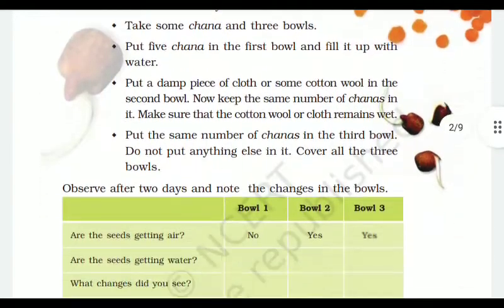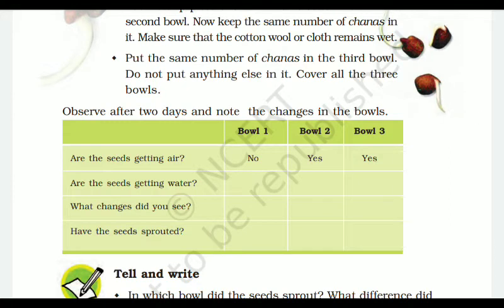In order to understand this activity, you have to fill up the table provided. You have to practically perform this activity, observe all the results, and write them in the table. After two days, note the changes in the bowls. Regarding air: in the first bowl, the chana are completely immersed in water so the seeds are not getting air. In the second bowl, since we are using wet cloth, the seeds are getting air. In the third bowl, yes, the seeds are getting air.